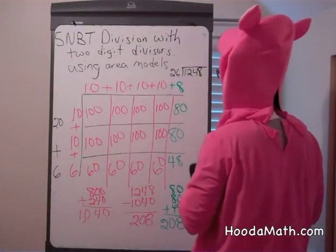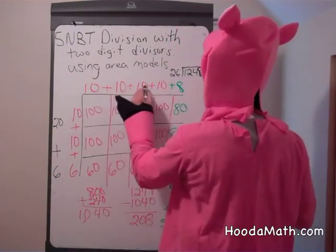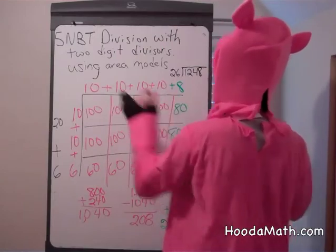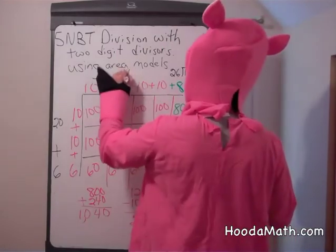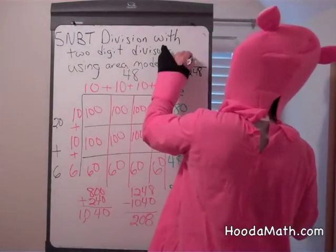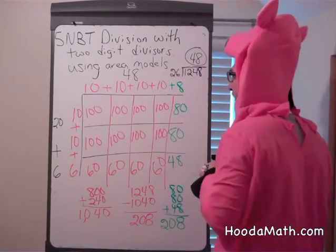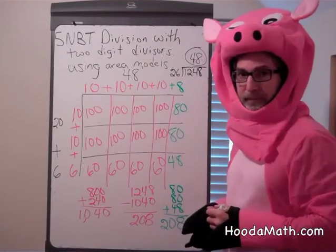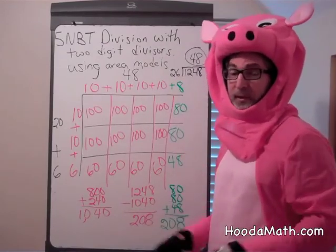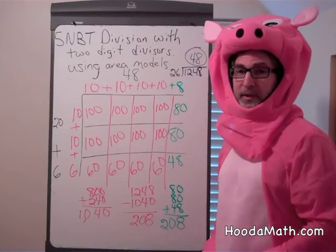So we know what our final answer is. 26 into 1,248 is 10, 20, 30, 40, 48. I'd like to see a porpoise or a chimpanzee do that!